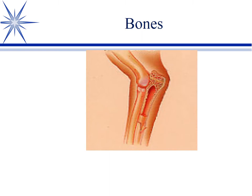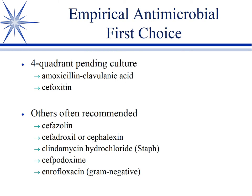Osteomyelitis affects bones. In human medicine, staph is the primary pathogen. In veterinary medicine, we typically deal with mixed infections. Staph can be a component, but we see gram negatives, and about 30% of our osteomyelitis cases have obligate anaerobic components in addition to other aerobes and facultative anaerobes. So unless you prove by culture that it doesn't have an obligate anaerobe, you must provide activity against it. We typically start with four-quadrant coverage.